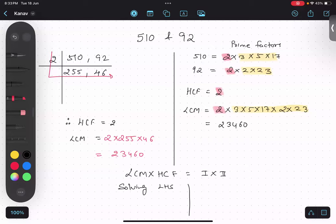So that means LCM into HCF: 23,460 into 2, which will give me 46,920.